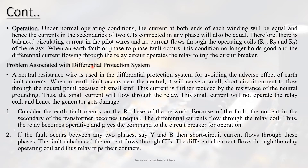The next problem is associated with the differential protection system. The neutral wire is used in the differential protection system to avoid the adverse effect of earth fault current. Earth fault current is accommodated by the neutral resistance wire provided. A small short-circuit current flows through the neutral point, and this current is further reduced by the resistance of the neutral grounding.